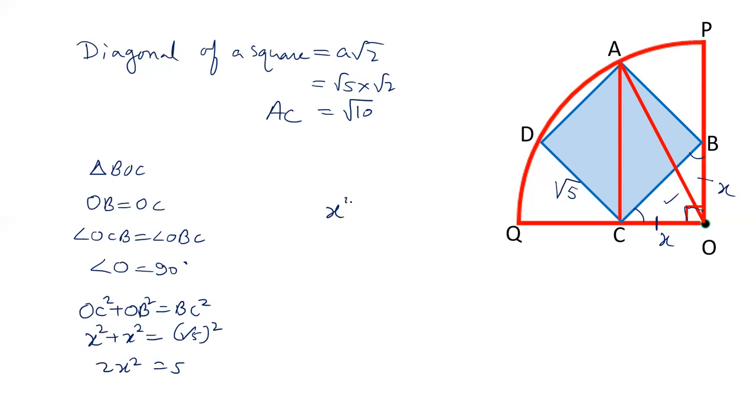So value of x² equals 5/2. Value of x is √(5/2), or you can also write √5/√2.